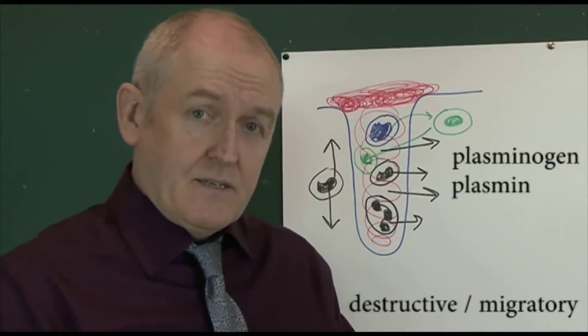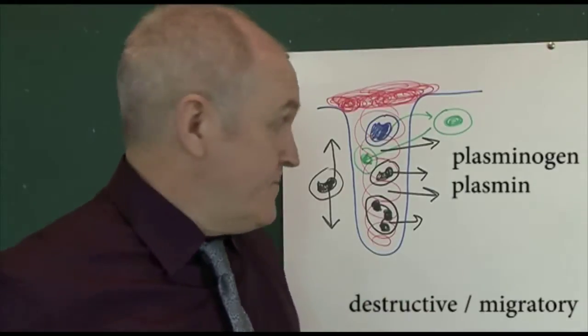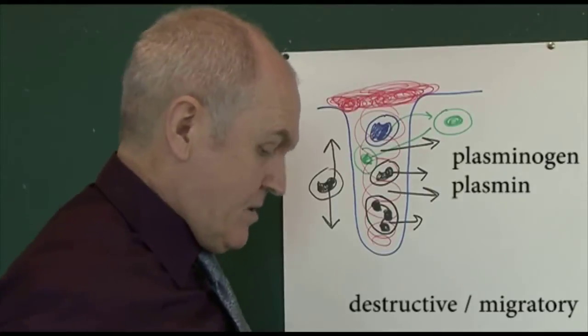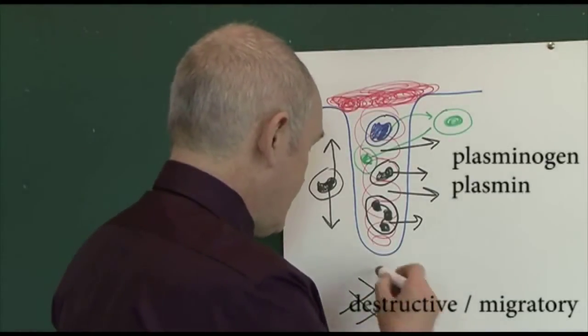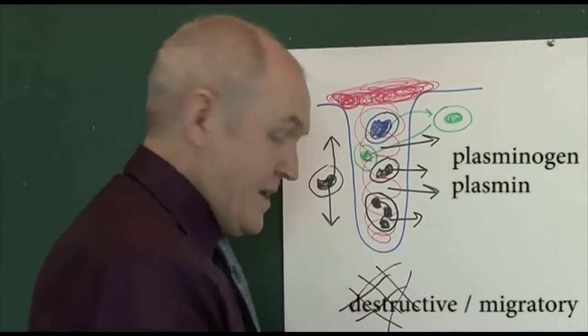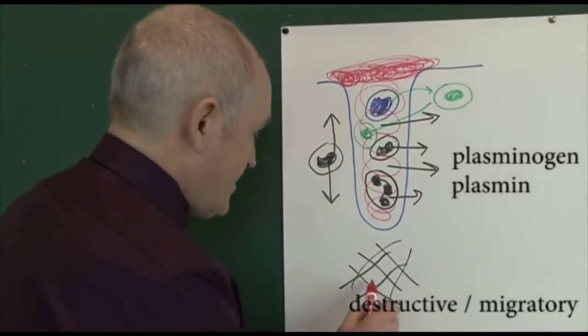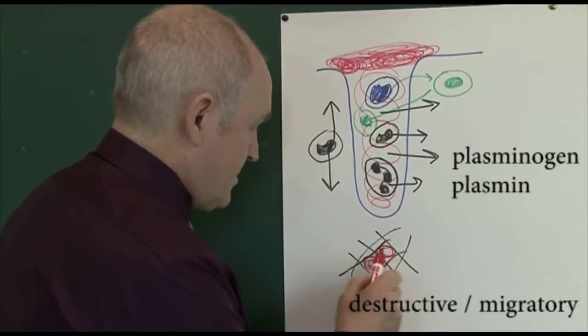The fibrin strands compose the blood clot. So what you actually have in a blood clot is fibrin strands with red cells sticking to it. That's what a blood clot is.